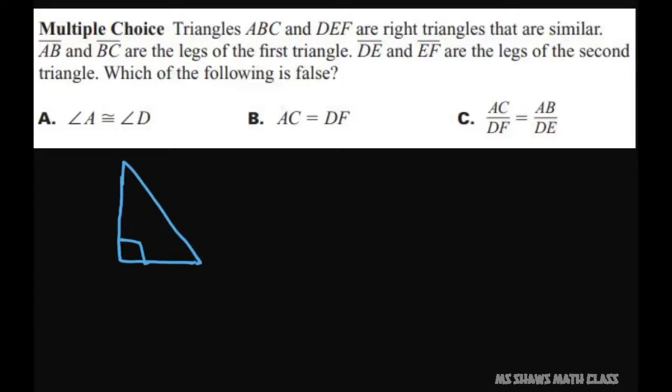So this one would be, we'd call this A, B, C and D, E, F. Let's call, oh, we have to write this out. So AB and BC, so I did that right. These are the legs, so these are your legs.